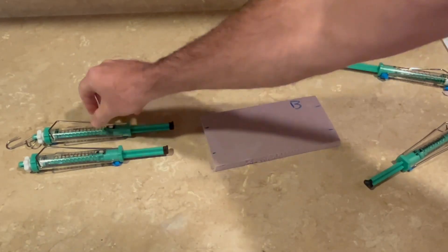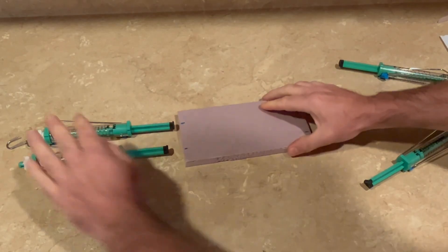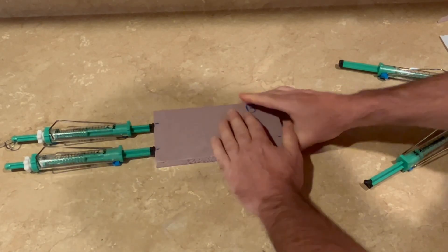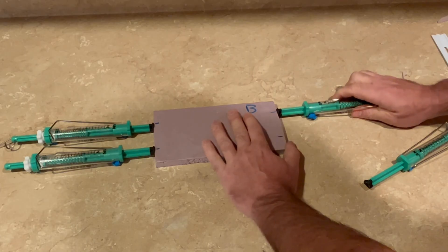Secure two spring scales against the table using sticky tack so that they're two inches apart. They should line up against the marks on one side of side B.